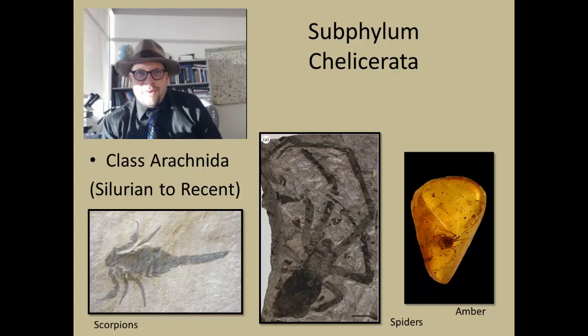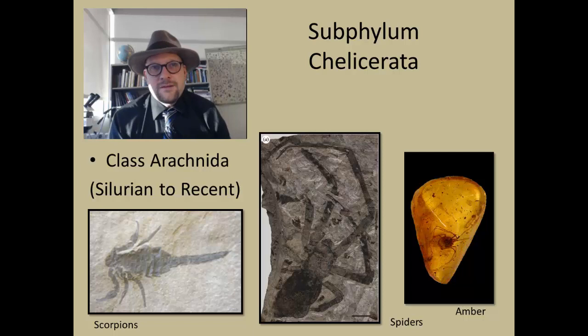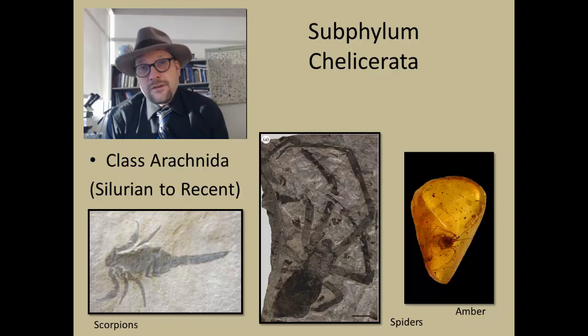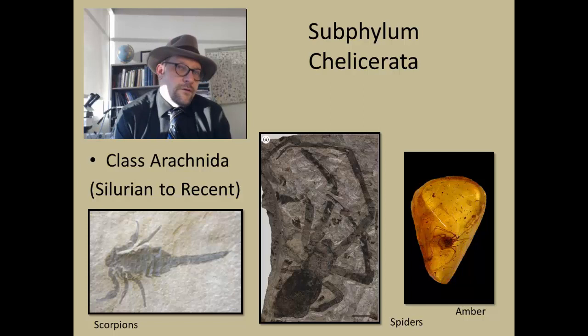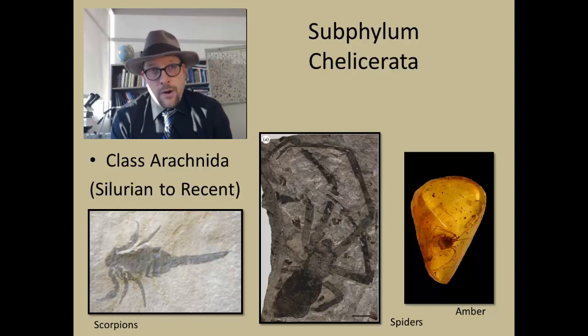The next group of the Chelicerata are the very diverse class, the Arachnida, which include spiders and scorpions. This is another group of arthropods that became specialized for life on land. This group has a fossil record that extends all the way back to the Silurian. In fact, the Arachnida are likely the first group of arthropods to diversify for life on land and probably co-occurred with those early land Myriapoda.